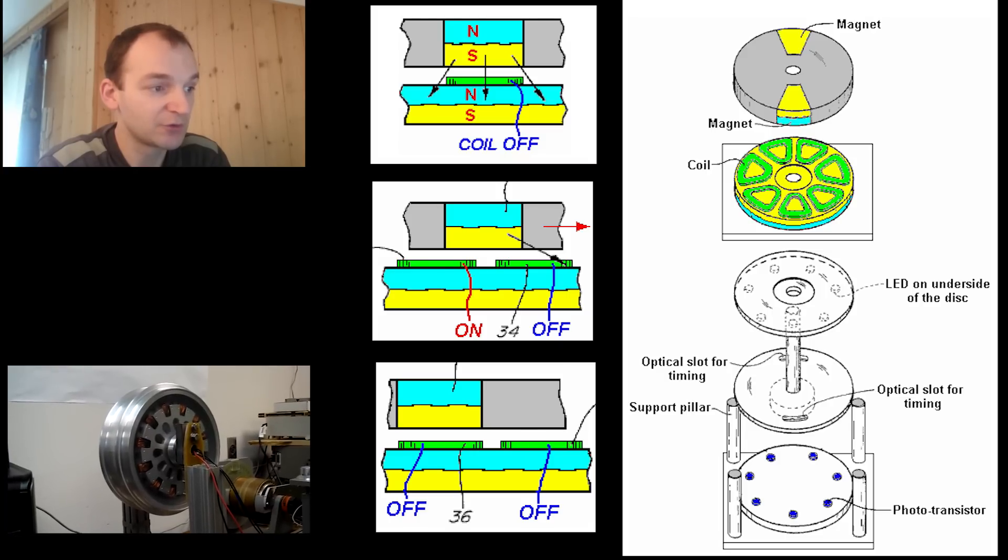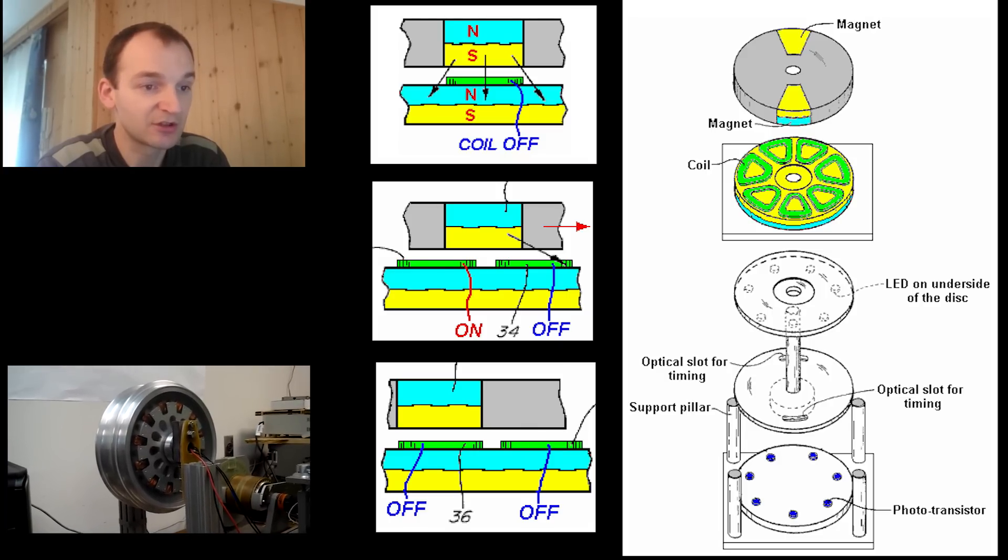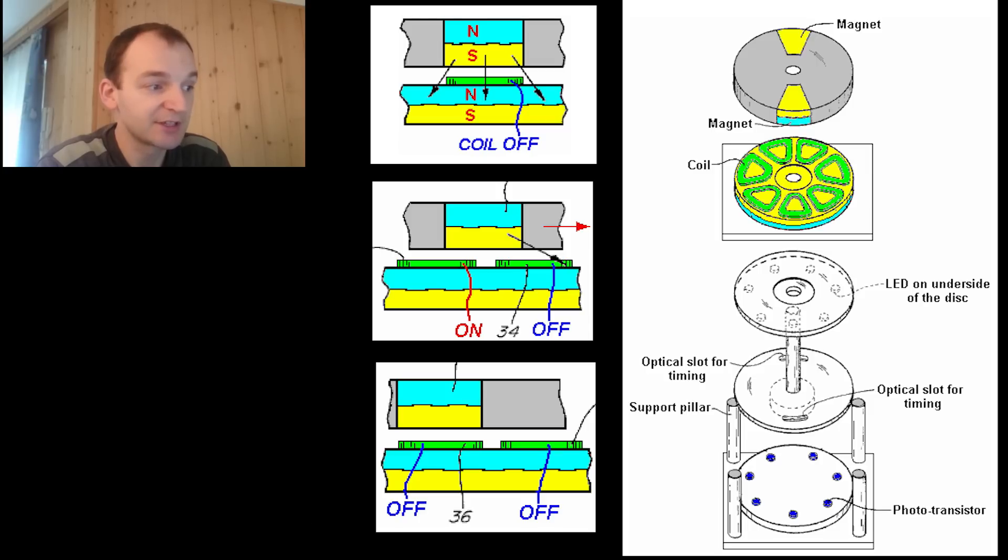This staggering of two positions is essential for generating smooth continuous rotational torque and self-starting without any need to rotate the shaft manually.